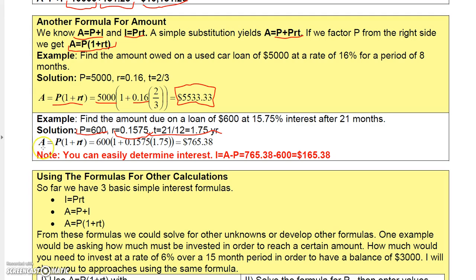So if you just want the amount, you can go to this formula, principal times 1 plus RT. And what we can do there is put in the 600 for principal, and then again put parentheses around the outside of this. And then on the inside, we have 1 plus 0.1575, which is the rate times the time 1.75. And then just plug it into your calculator, and you get 765.38.